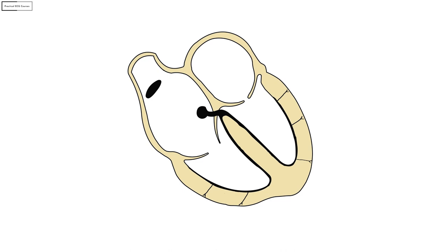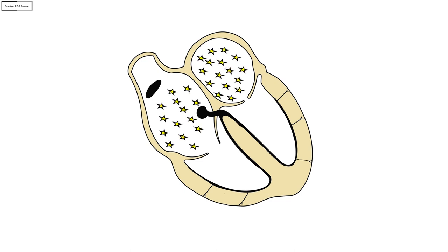Now let's consider what happens in AF. Instead of having a single impulse produced by the SA node, there are multiple foci producing around 300 to 600 impulses. These impulses compete to depolarize the atria but cannot do so in an organized way. So instead of an organized atrial contraction, the atria fibrillates — hence the name atrial fibrillation. Now think about the rate of the fastest AF you have seen. The fastest rates will be somewhere in the range of 180 to 200, never more than 200.